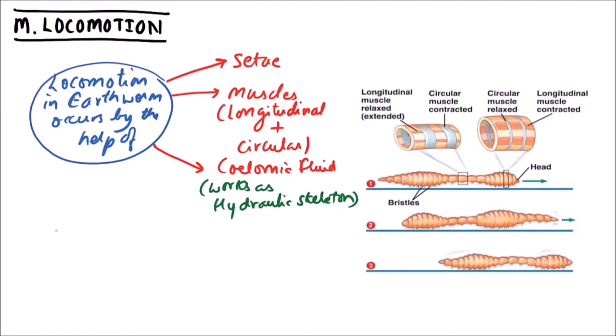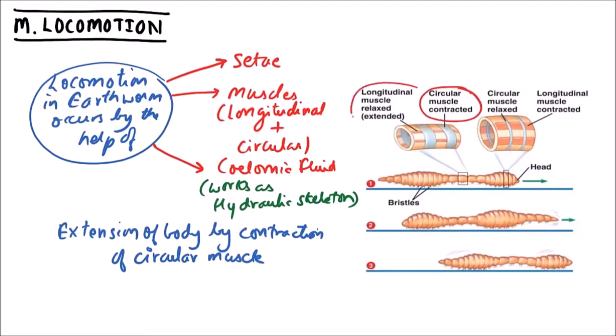Now what is the mechanism? First of all, earthworm will perform extension of body by contraction of circular muscles. The longitudinal muscles will be relaxed at this position. So we can observe that the circular muscles are contracted while the longitudinal muscles are relaxed in this region.